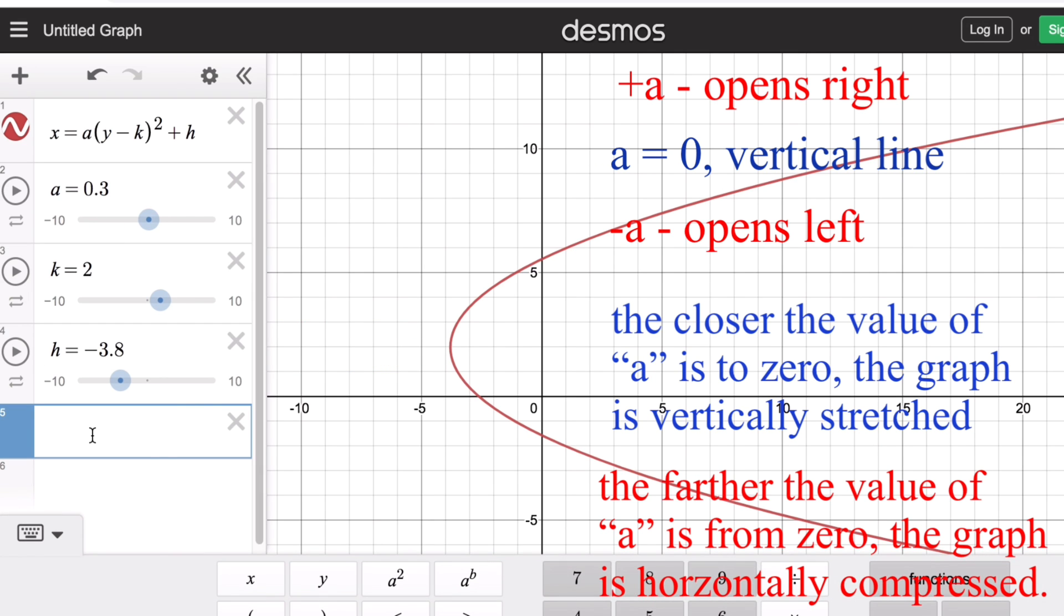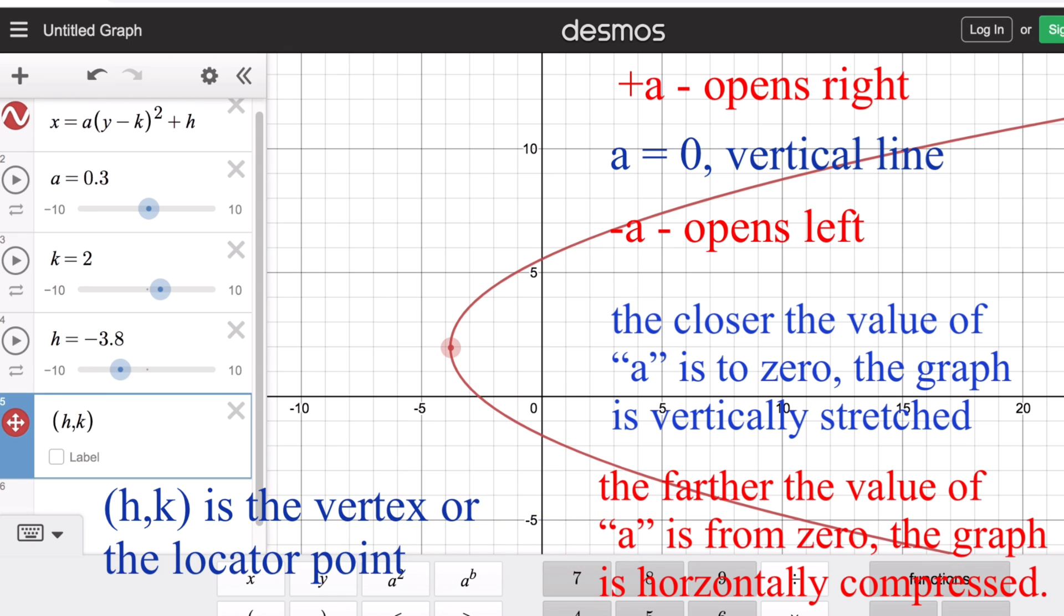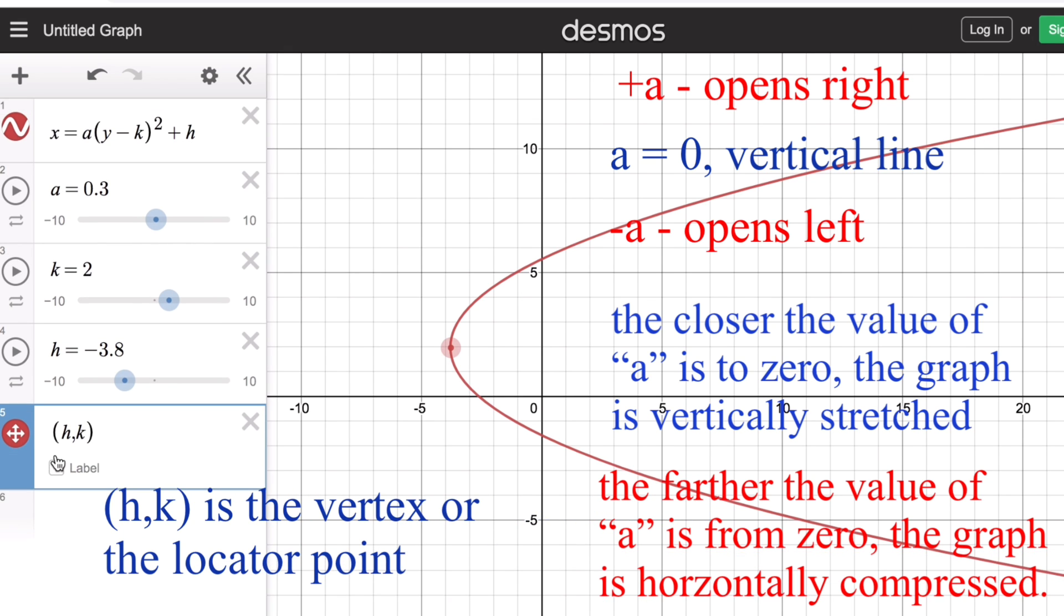We also remember that the coordinate (h, k) is the vertex of the graph, or we sometimes call this the locator point. So this one right here is our locator point.